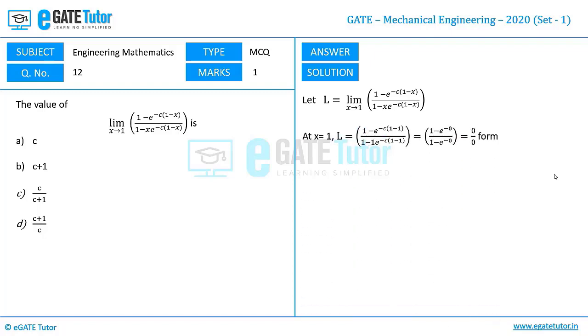Let us substitute x equals 1 in the given function. This turns out to be 0/0 form, which is indeterminate form.